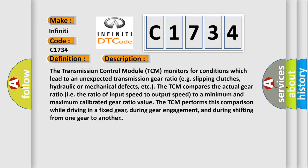Here is a short description of this DTC code. The Transmission Control Module (TCM) monitors for conditions which lead to an unexpected transmission gear ratio, such as slipping clutches, hydraulic or mechanical defects. The TCM compares the actual gear ratio (the ratio of input speed to output speed) to a minimum and maximum calibrated gear ratio value. The TCM performs this comparison while driving in a fixed gear, during gear engagement, and during shifting from one gear to another.